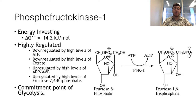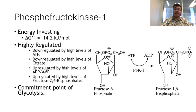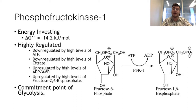The third step is catalyzed by phosphofructokinase-1, abbreviated PFK1. This catalyzes the formation of fructose-1,6-bisphosphate from fructose-6-phosphate and ATP. It is a critical and extremely regulated step. PFK1 is downregulated by high concentrations of ATP, since if the cell has high energy it does not need to create more. It is also downregulated by citrate, since high citrate means the TCA cycle is about to generate a lot of ATP via the electron transport chain. PFK1 is upregulated by high levels of ADP or AMP, which is reciprocal regulation compared to ATP.